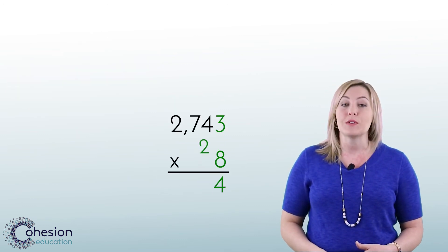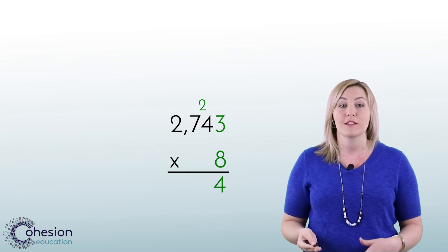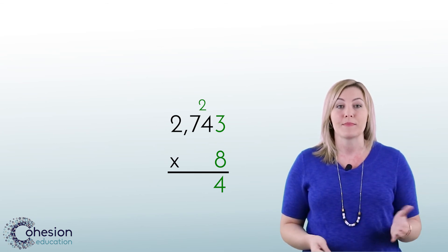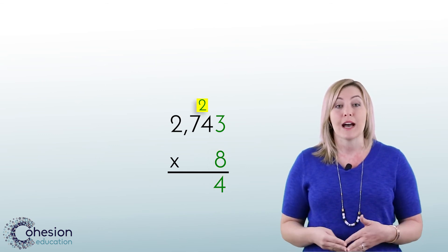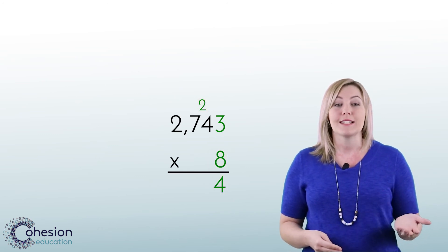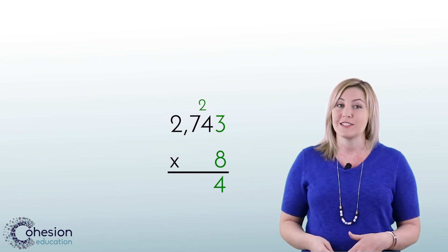In our example, the two regrouped tens are part of the product from multiplying 8 times 3. We would not multiply the 4 times 8, so why would we multiply the 2 times 8? The regrouped tens are simply to be added to our tens total.